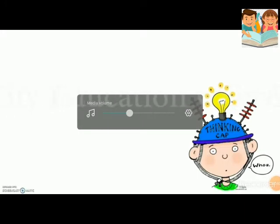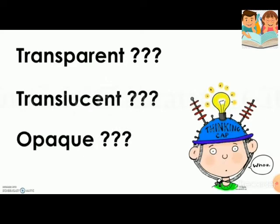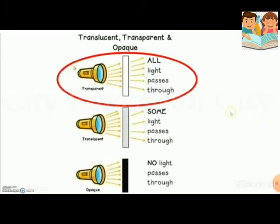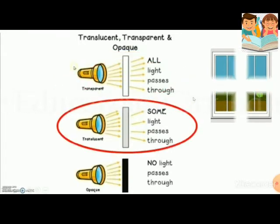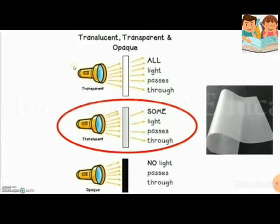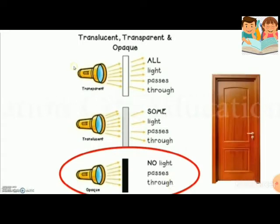You are going to tell me if the objects I show you are transparent, translucent, or opaque. Before we begin, let's have a short review. Transparent means all light passes through — an example is a window. Translucent means some light passes through — an example is wax paper. Opaque means no light passes through — an example is a door.